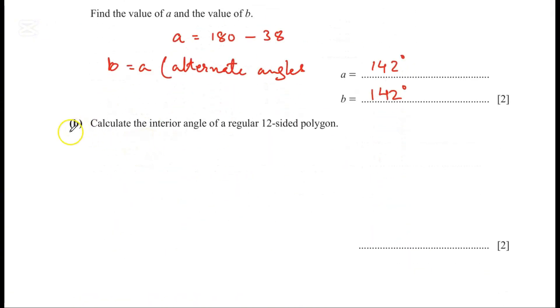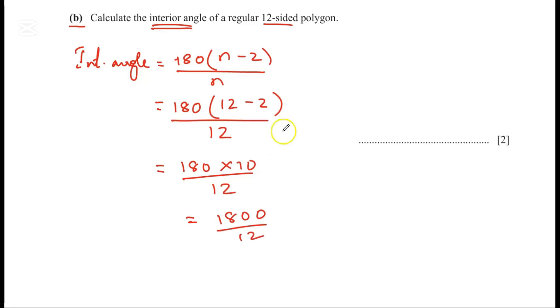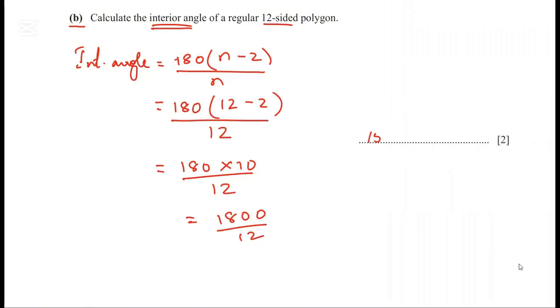Question 2 part B. Calculate the interior angle of a regular 12-sided polygon. The interior angle equals 180 times (n minus 2) divided by n, where n is the number of sides. That's 180 times (12 minus 2) divided by 12, which equals 180 times 10 divided by 12. That's 1800 divided by 12, giving 150 degrees.